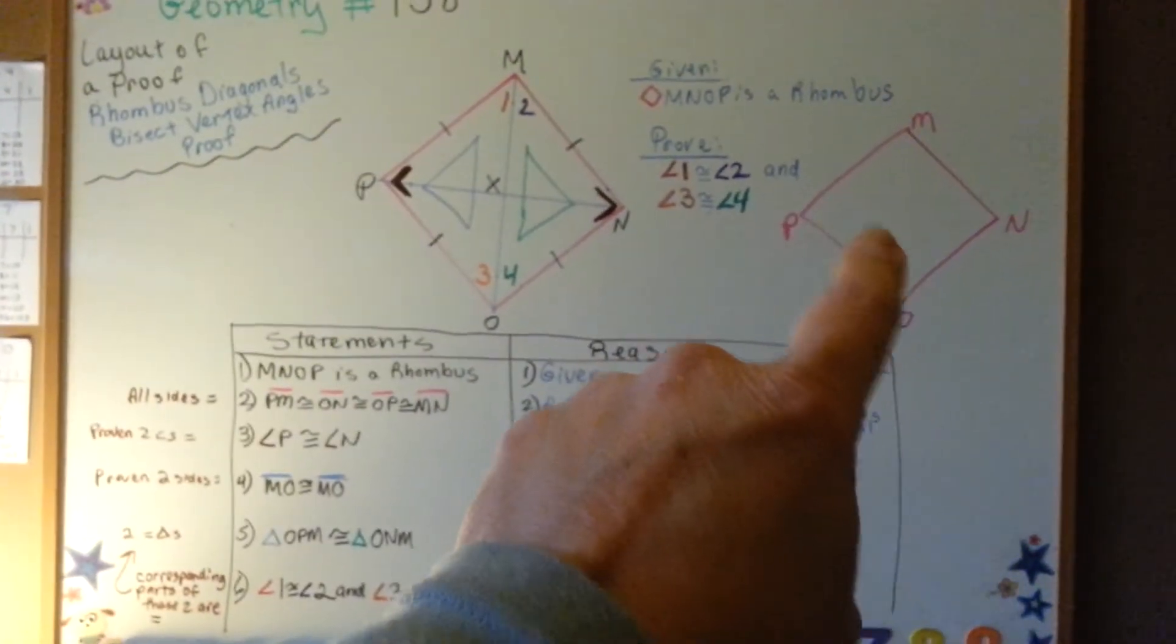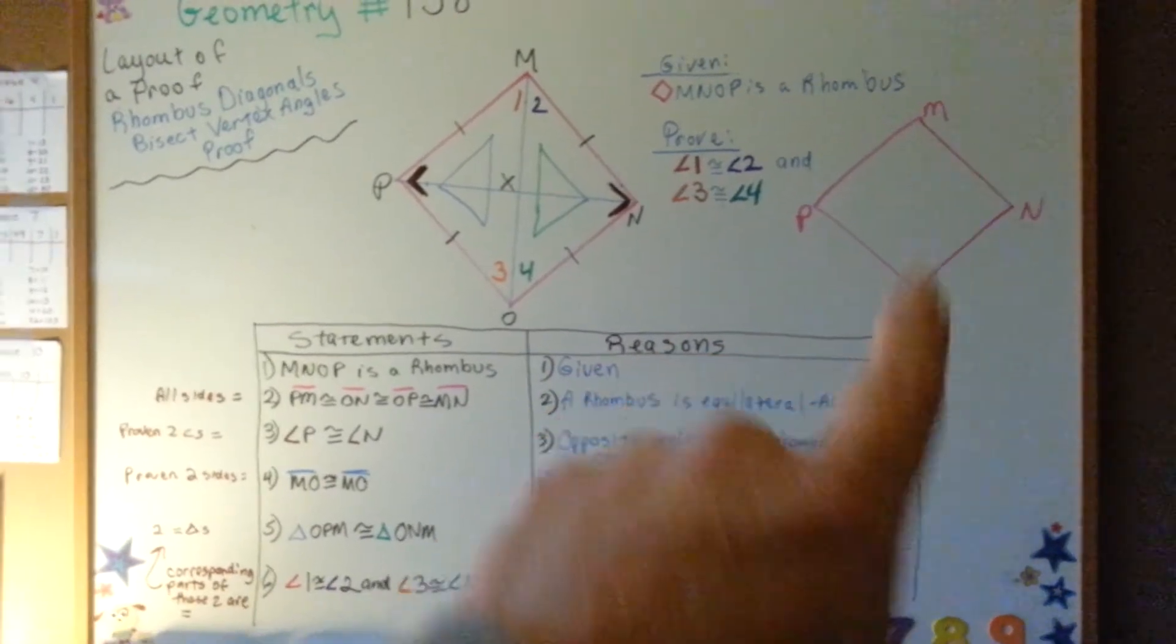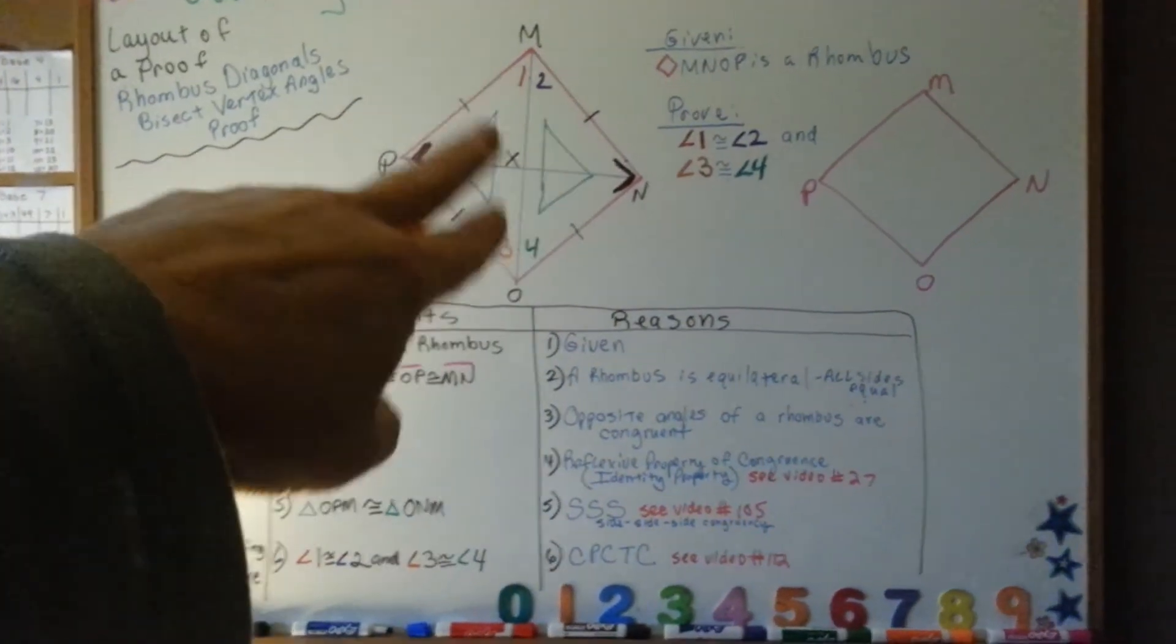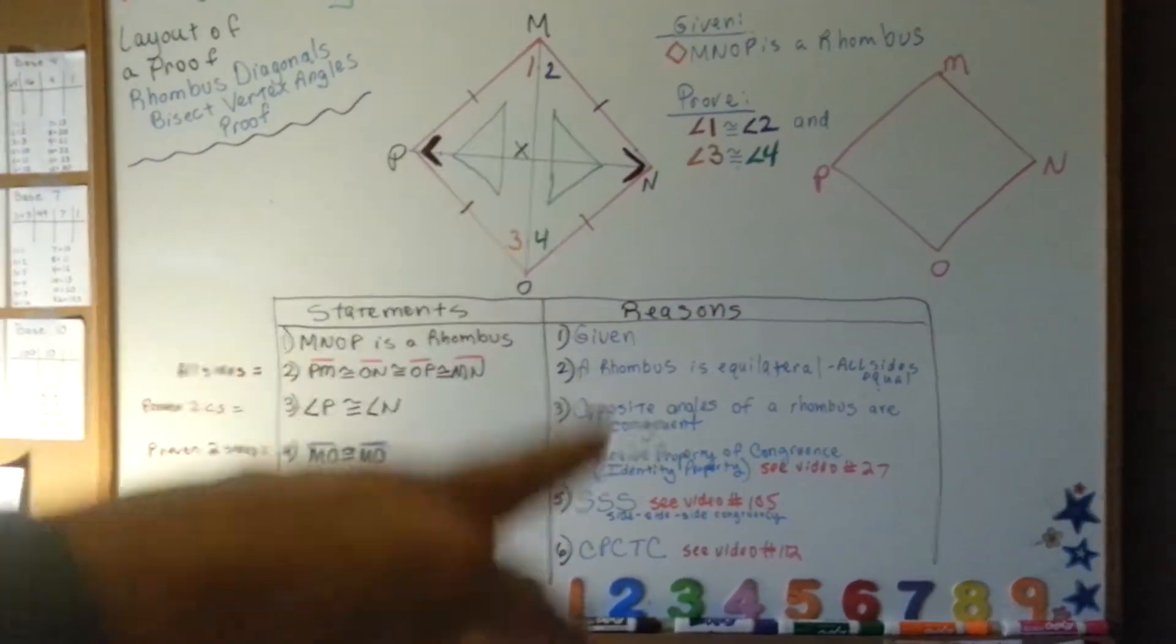This is the original drawing, nothing in it. M-N-O-P, it's a rhombus. This is the one I've done the work on that I'll show you as I explain the table.